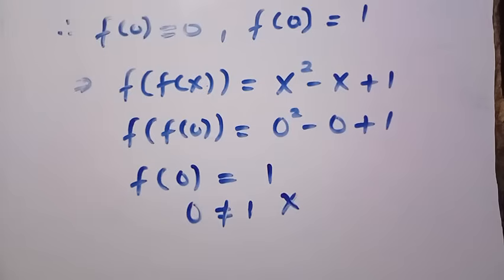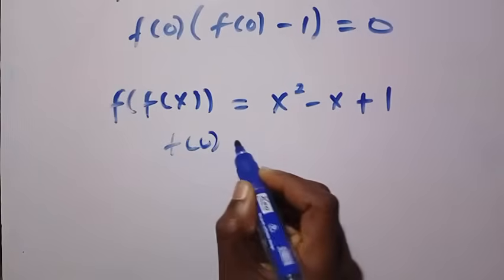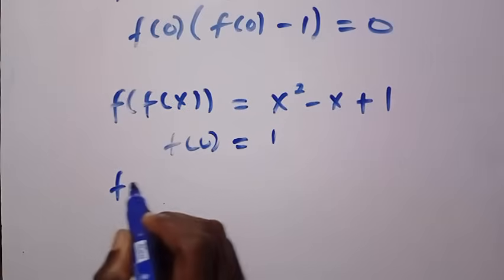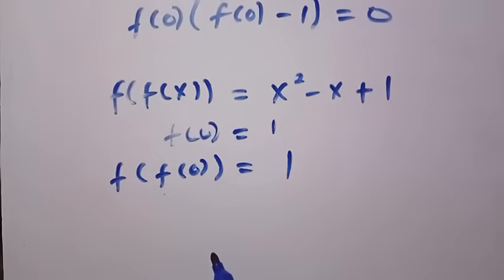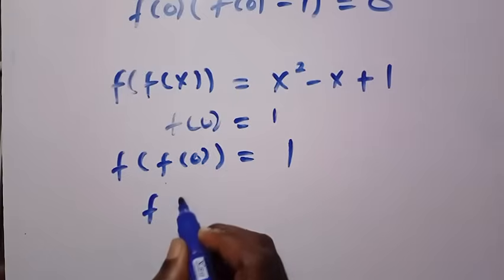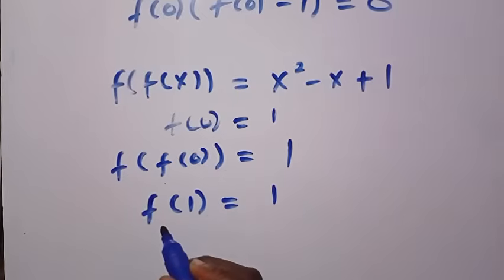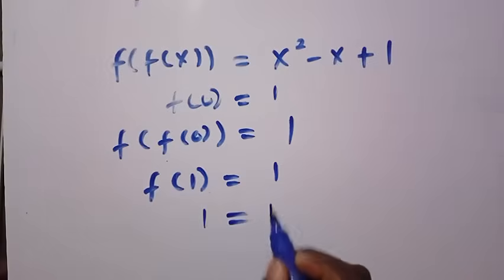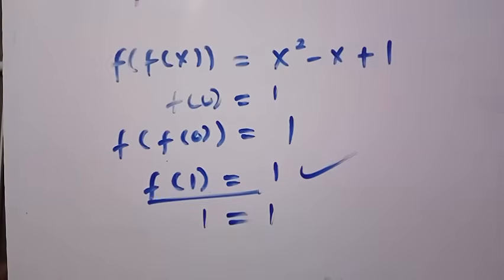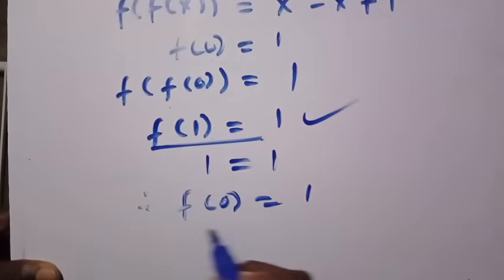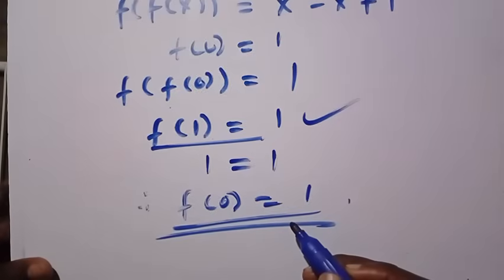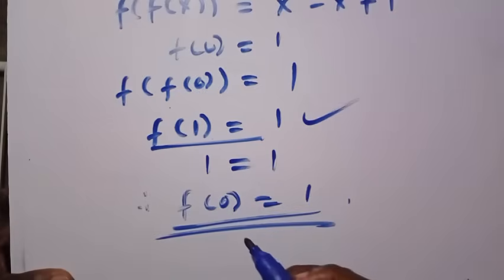And if we check for the second one, for f of 0 equals 1: we have f of f of 0 equals 1, right? And f of 0 has been given to be 1, so we have f of 1 equals 1. But f of 1 is also equals 1, and we see that 1 equals 1. So this has verified that f of 0 equals 1 is the only answer, and that f of 0 equals 0 is not the solution.